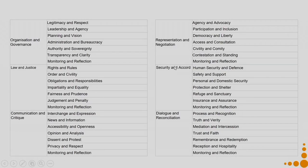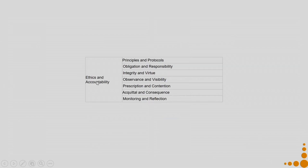Security and accord: human security and defence, safety and support, personal and domestic security, protection and shelter, refuge and sanctuary, insurance and assurance, and monitoring and reflection. Dialogue and reconciliation: processes and recognition, truth and verity, mediation and intercession, truth and faith, remembrance and redemption, reception and hospitality, and monitoring and reflection. Finally ethics and accountability: principles and protocols, obligations and responsibility, integrity and virtue, observance and visibility, prescription and contention, acquittal and consequence, and monitoring and reflection.